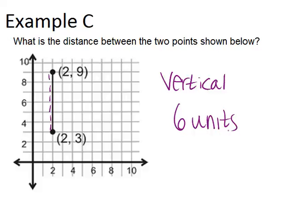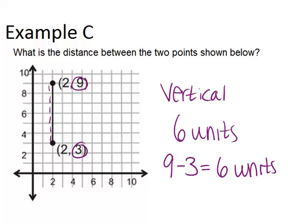Another way you could do it, sort of more mathematically, that involves less counting, would be to look at the Y coordinates, because it's changing in the Y direction, and subtract them. 9 minus 3 equals 6, so again we get 6 units. Okay, same answer.